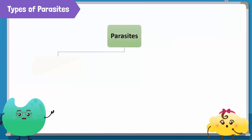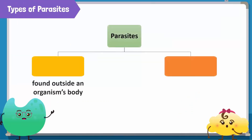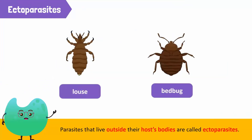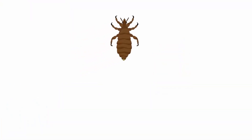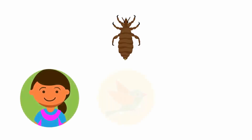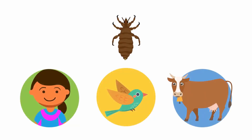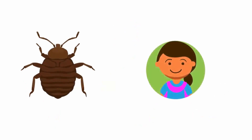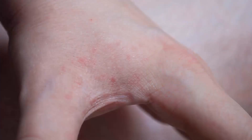Parasites can be found both outside and inside an organism's body. Parasites that live outside their host bodies are called ectoparasites. Lice and bedbugs are examples of these parasites. Lice are parasites of humans, birds, and many other mammals. In humans, they are usually found in hair and feed on their host's blood. Bedbugs also feed on humans' blood. They can bite humans on any part of their body, and their bites appear as red spots which are often itchy.